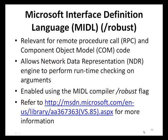For applications that implement remote procedure calls and component object model code, the Microsoft Interface Definition Language robust compiler flag can be used to provide additional defenses. When this flag is used, the network data representation will perform runtime error checking on correlated arguments in dynamic arrays, unions, and in-out interface pointers. A correlated argument is an argument that uses attributes allowing the size of the data object to be determined at runtime.